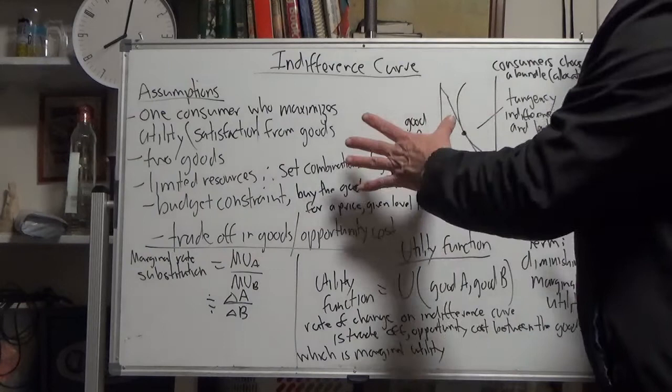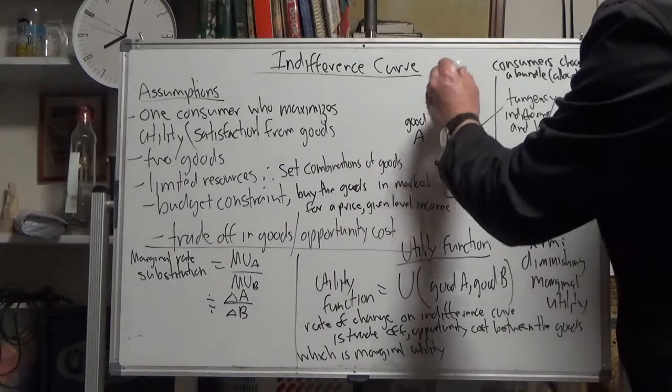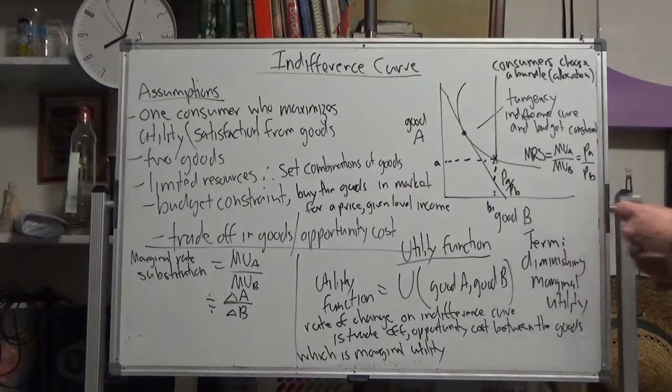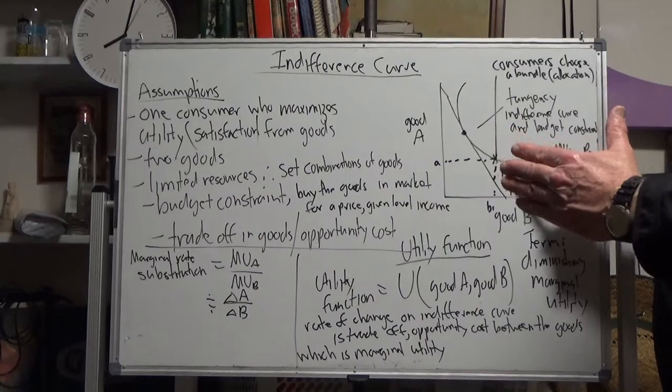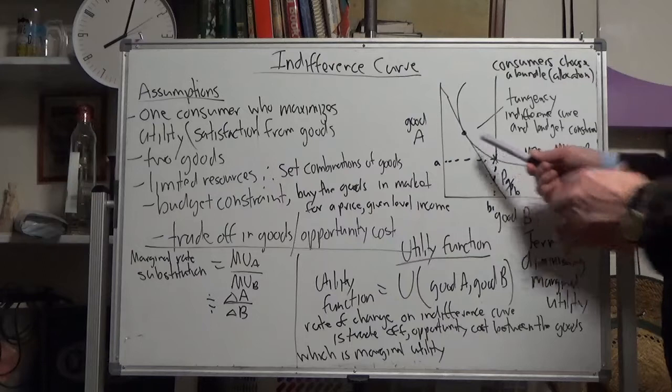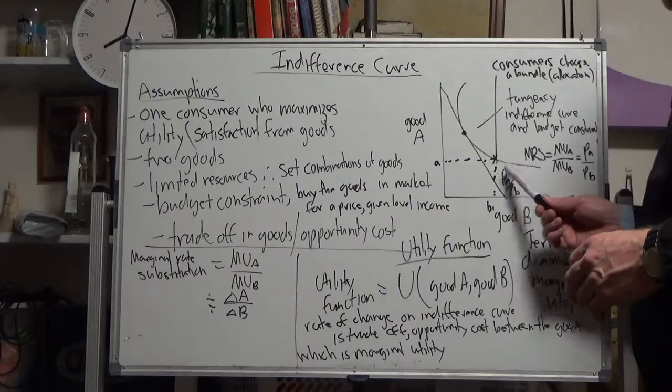The rate of change of that indifference curve is called marginal utility. Marginal utility is the rate of change, a precise mathematical measurement of the rate of change of the choice of giving up the two goods on a small section of the indifference curve.